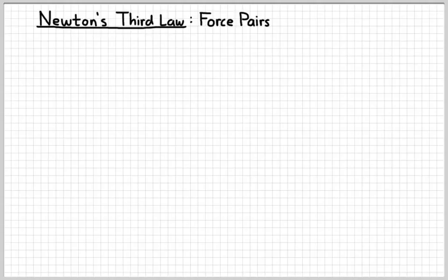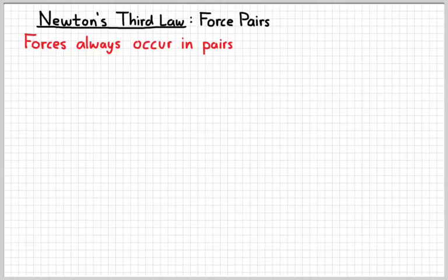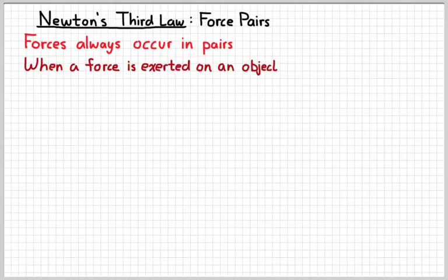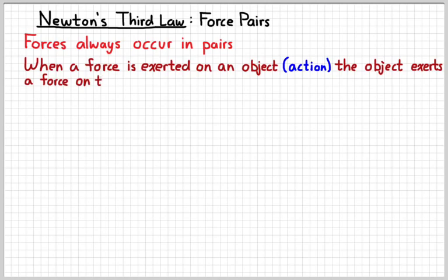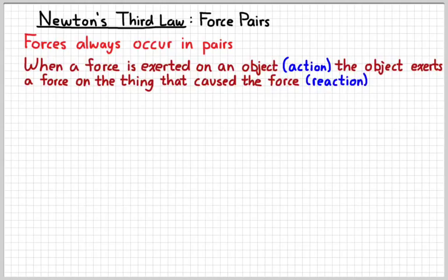Basically, Newton's Third Law is all about force pairs, and the big idea here is that forces always occur in pairs. You can't ever have a single force — there's always two forces. Whenever there's a force exerted on an object, which we might refer to as an action force, then that object is going to exert a force on whatever caused that force, and typically we call that a reaction.